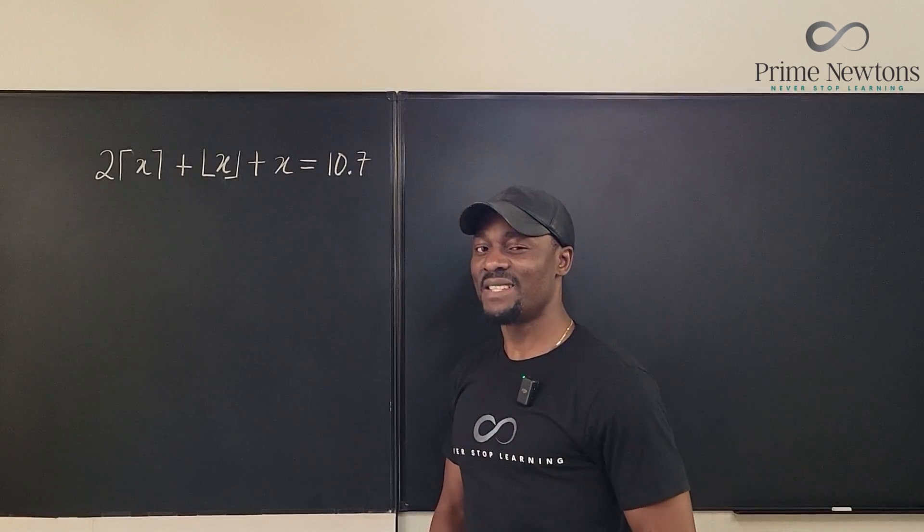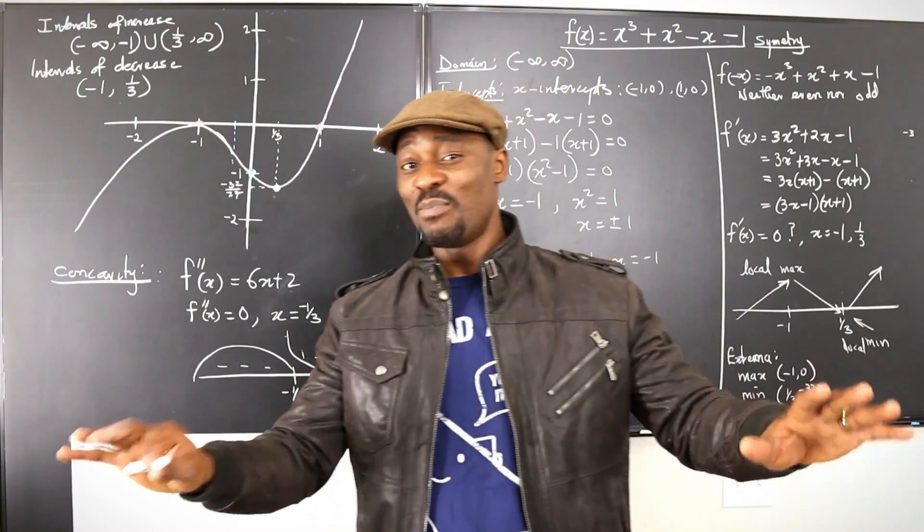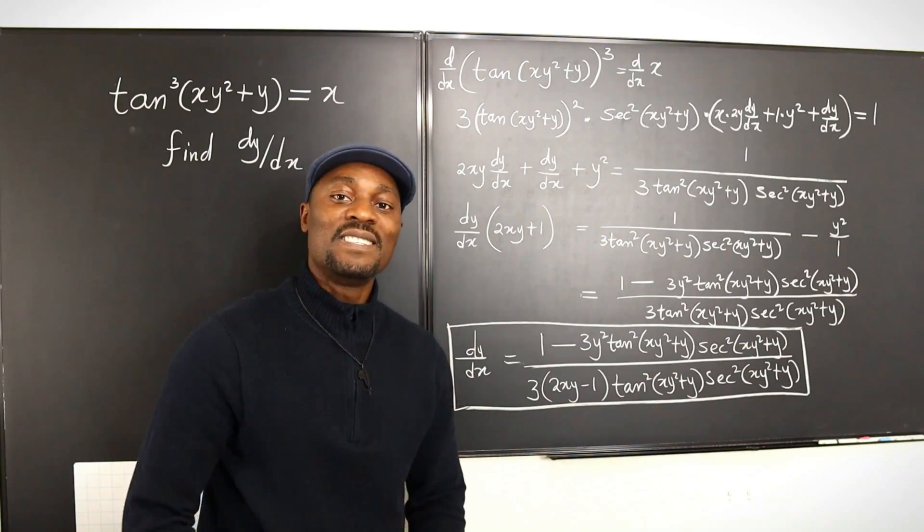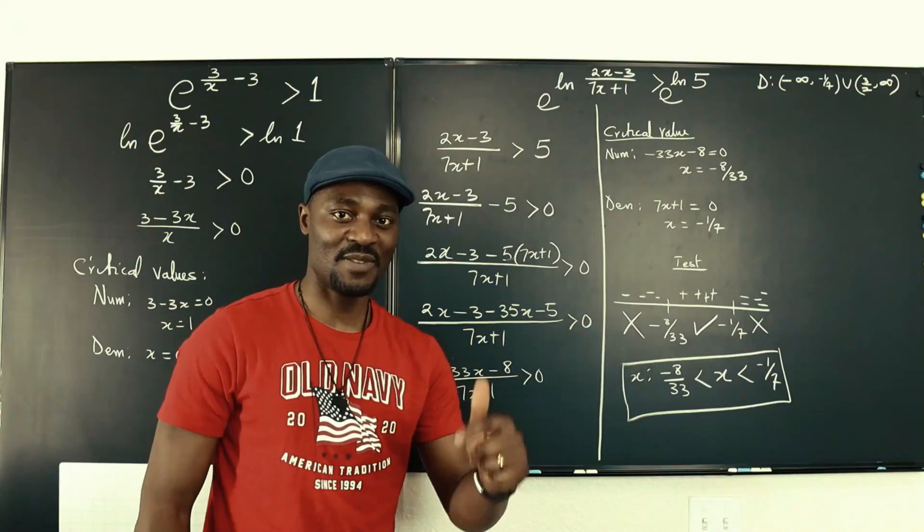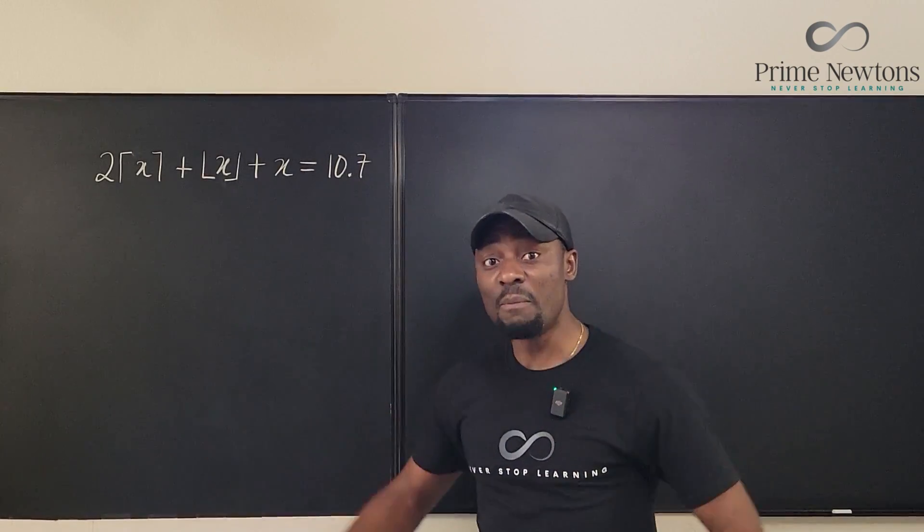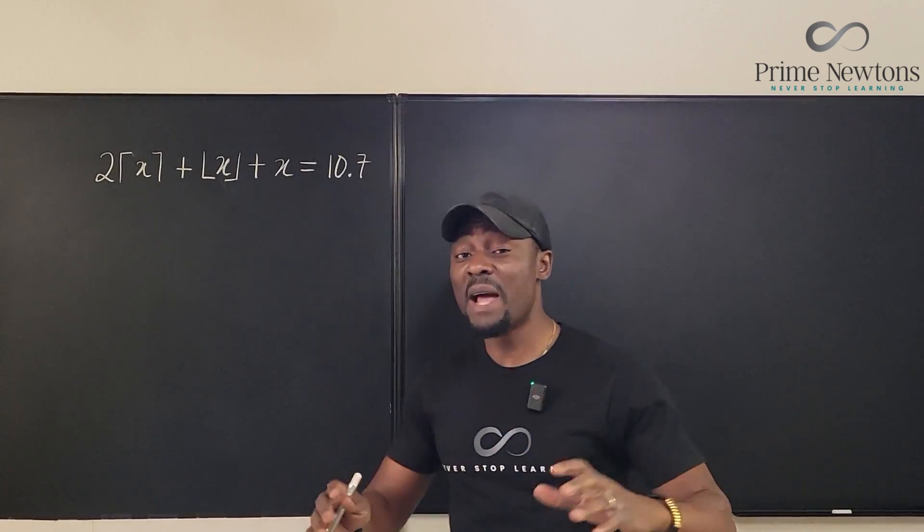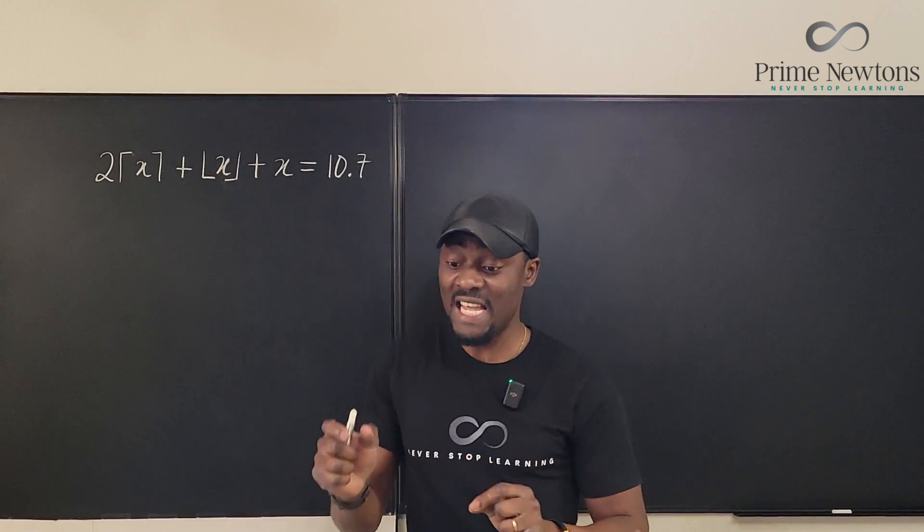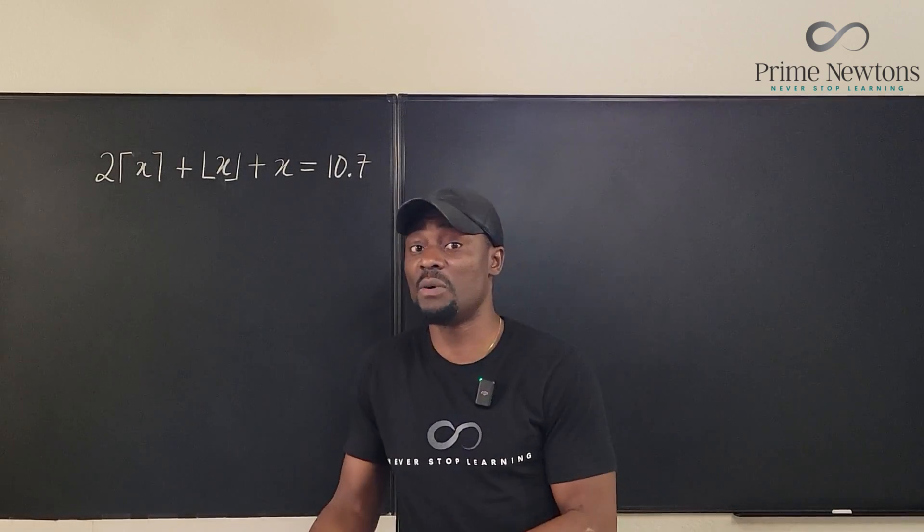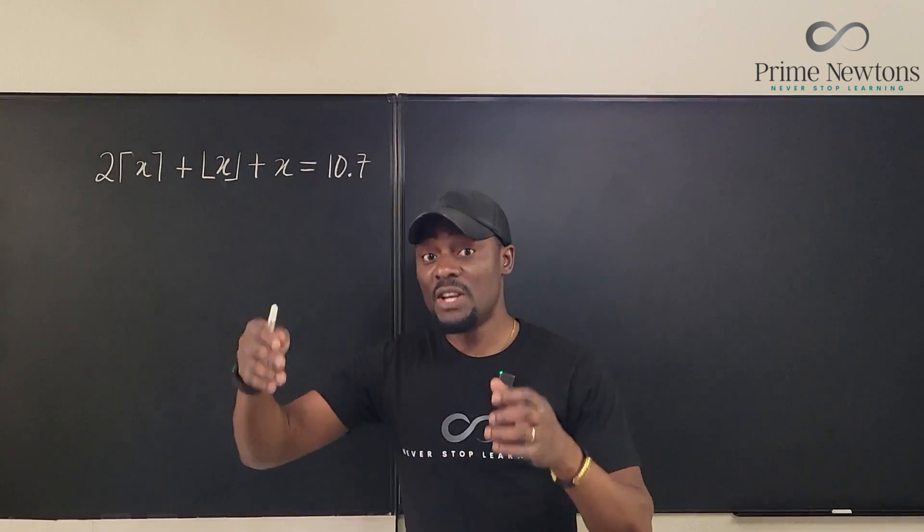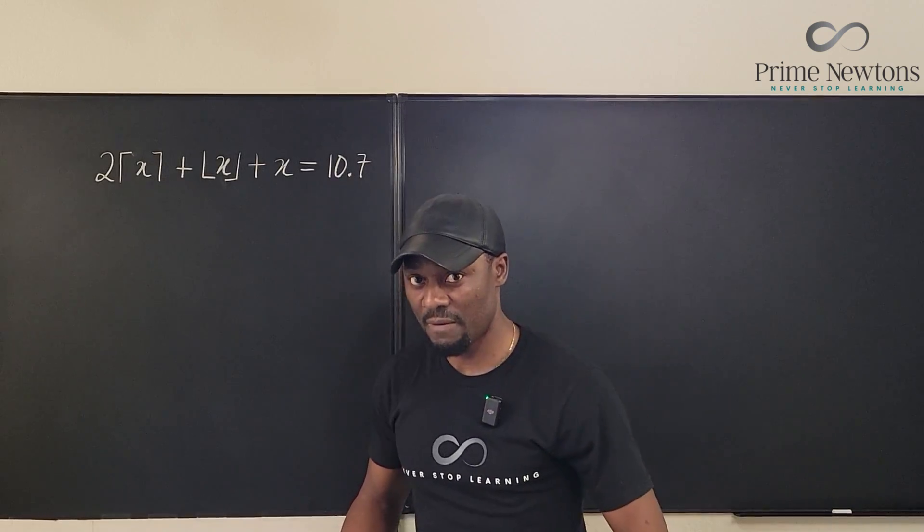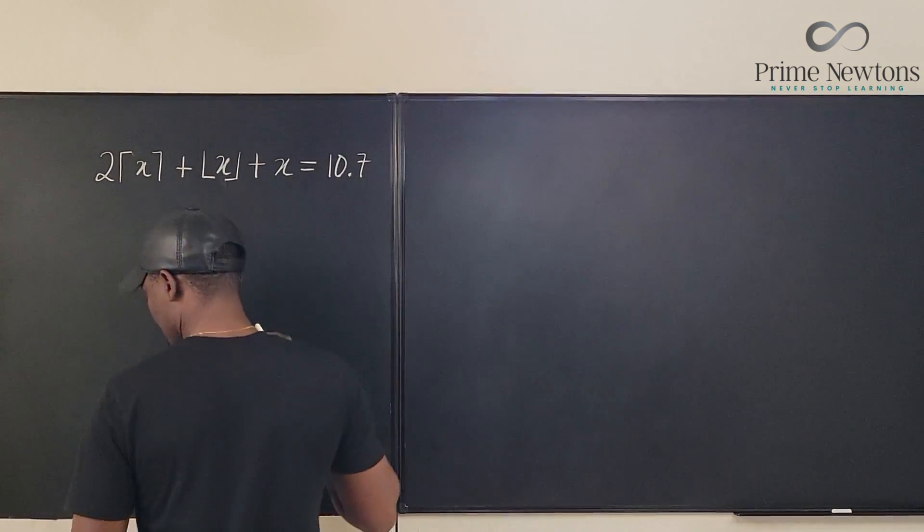We're going to start by looking at how any number is typically written. Remember, it doesn't matter what the number is - any number you write has an integer part and a decimal part. Sometimes the integer part is zero and sometimes the decimal part is zero, but every number has both parts.